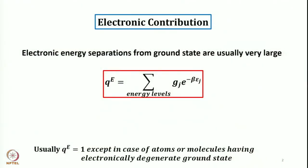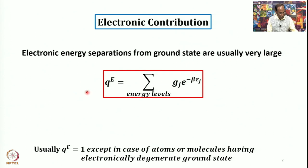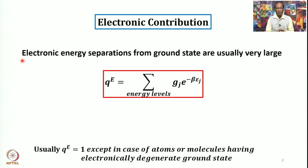However, in this case the degeneracy of the ground state will play a role — whether the value will be 1 or equal to the degeneracy of the ground state. The electronic contribution can be obtained directly by summation; we do not need any approximation. The reason is that electronic energy separations from the ground state are usually very large, so you would require exceptionally high temperatures for transitions to be thermally activated.